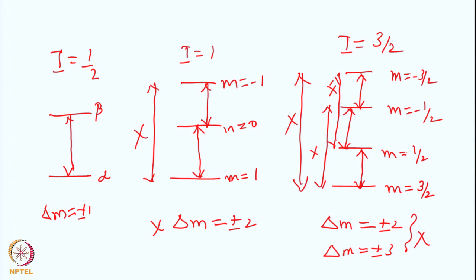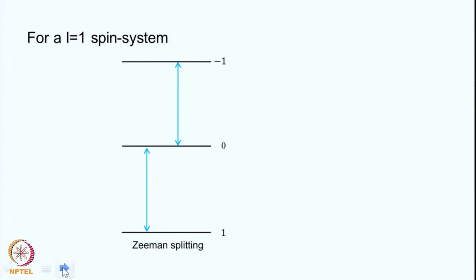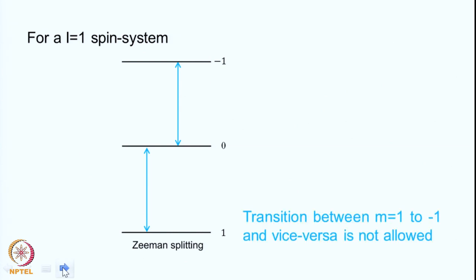These are the selection rules for RF-induced transitions. When delta M equals plus or minus 1, these are called single quantum transitions. Delta M equal to plus or minus 2 are called double quantum transitions, and delta M equal to plus or minus 3 are called triple quantum transitions. There are also zero quantum transitions (delta M equal to 0), which will appear later and are also not allowed by RF. Transitions between M equal to 1 and minus 1, for example, are not allowed.